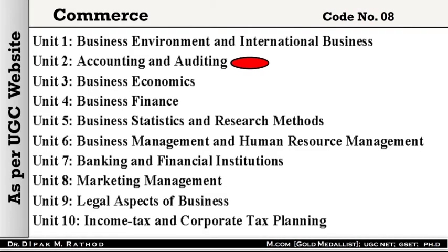As per the UGC website, the 10 units are: Unit 1 — Business Environment and International Business; Unit 2 — Accounting and Auditing; Unit 3 — Business Economics; Unit 4 — Business Finance; Unit 5 — Business Statistics and Research Methods; Unit 6 — Business Management and HRM; Unit 7 — Banking and Financial Institutions; Unit 8 — Marketing Management; Unit 9 — Legal Aspects of Business; Unit 10 — Income Tax and Corporate Tax Planning. These are not just 10 chapters — they are 10 different subjects related to commerce.